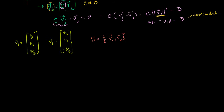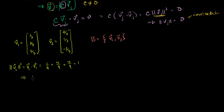First, what are the lengths of these vectors? The length of v1 squared is v1 dot v1, which is (1/3)² + (2/3)² + (2/3)², equal to 1/9 + 4/9 + 4/9, which equals 9/9 = 1. So the length of v1 is equal to 1.